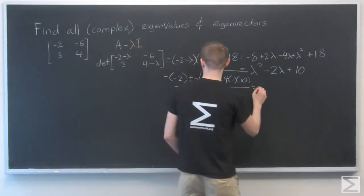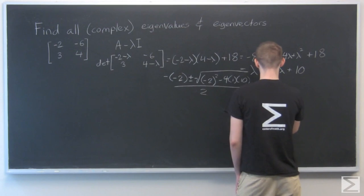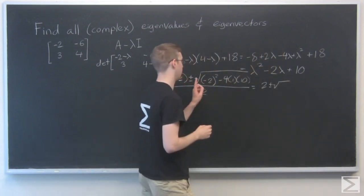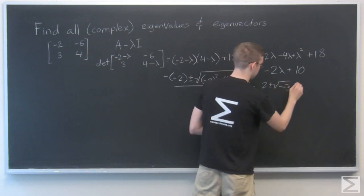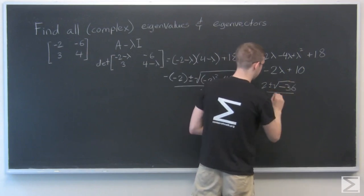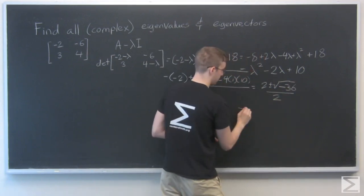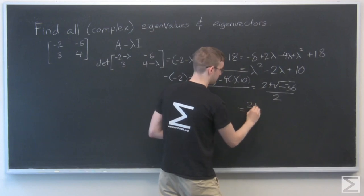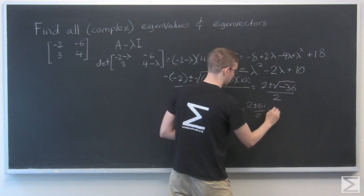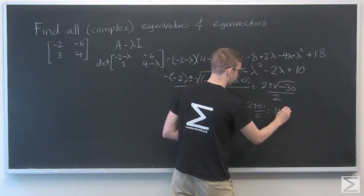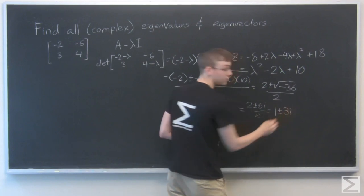All right, simplify that, and that's 2 plus or minus the square root. That's 4 minus 40, so negative 36, over 2, and that is equal to 2 plus or minus 6i over 2, which is 1 plus or minus 3i.